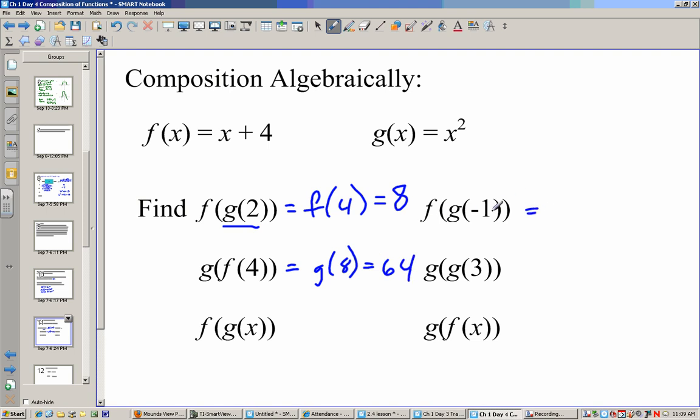Back to this one, g(-1), negative 1 squared is 1. Put f(1), 1 plus 4 is 5. g(g(3)), that looks a little bit different, but that just means we don't have to deal with f at all. g(3) is going to be 9, so now I have g(9) left over. Now I plug that back into g, 9 squared is 81.